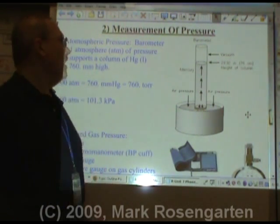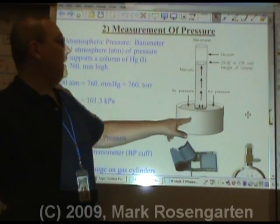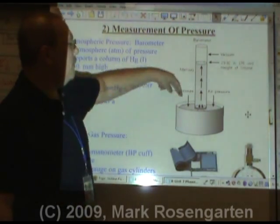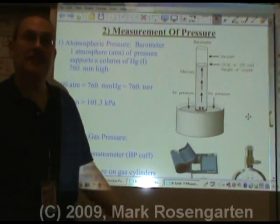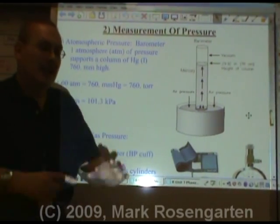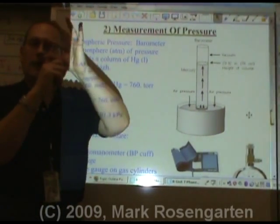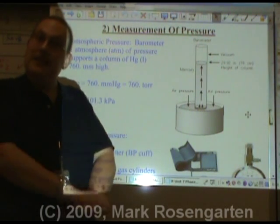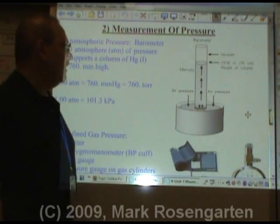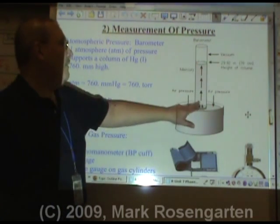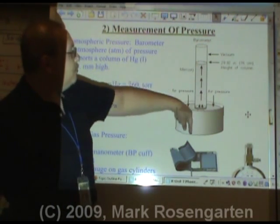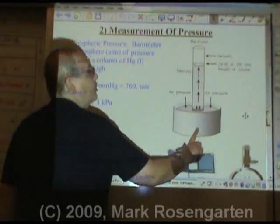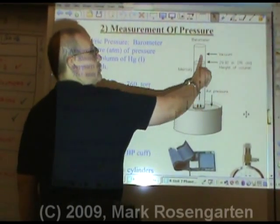Mercury, being a very heavy metal, is pushed by the air pressure — which pushes down with a force of about 14.7 pounds per square inch. In other words, over every square inch of that mercury it's pushing down with a force of about 14.7 pounds per square inch. That force pushing down on the mercury pushes the mercury up into the tube.